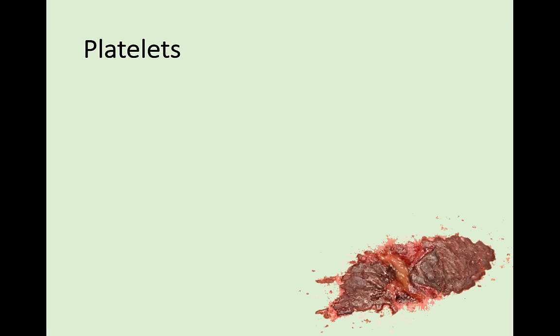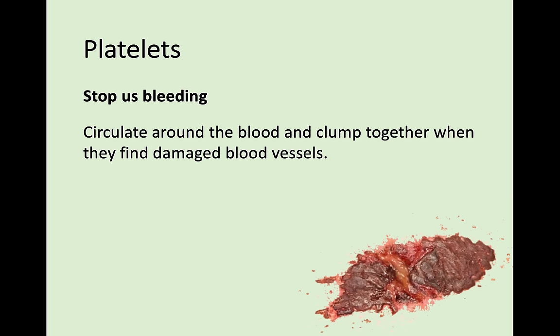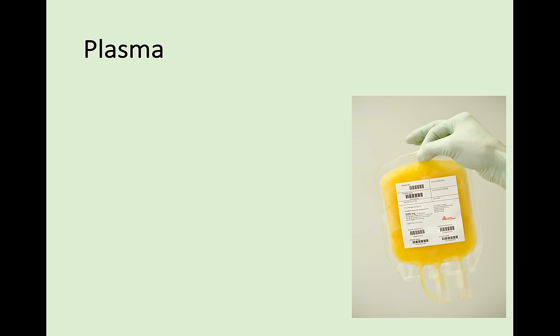Next, we're going to look at platelets. Platelets are there to stop us bleeding out - they're a really important part of our blood. Platelets circulate around your blood and clump together whenever they find any damaged blood vessels. If you get a cut, platelets clump together, and once that clump of platelets dries out it becomes a scab. That's what's there to stop your bleeding and assist in the healing process.